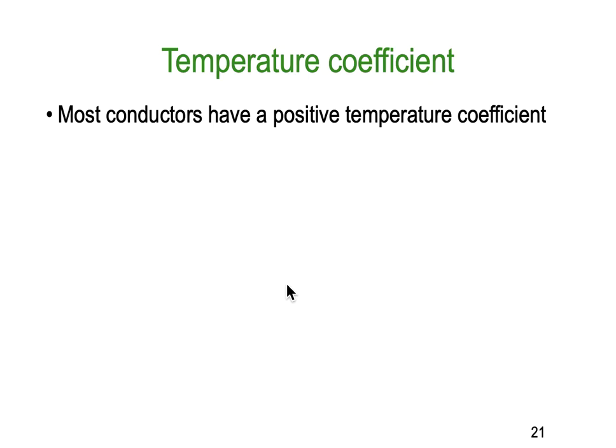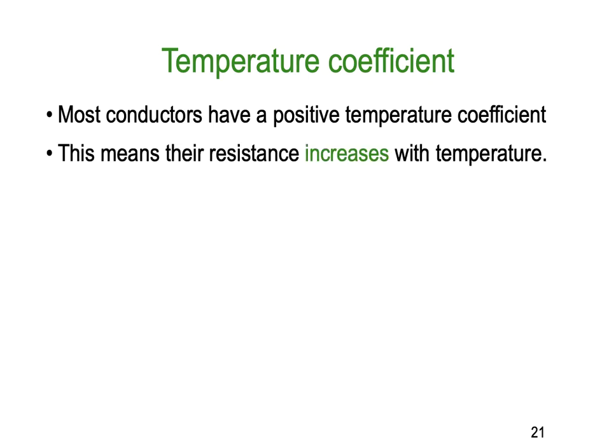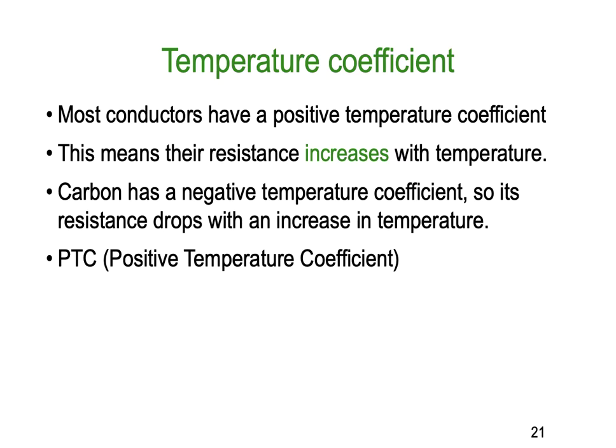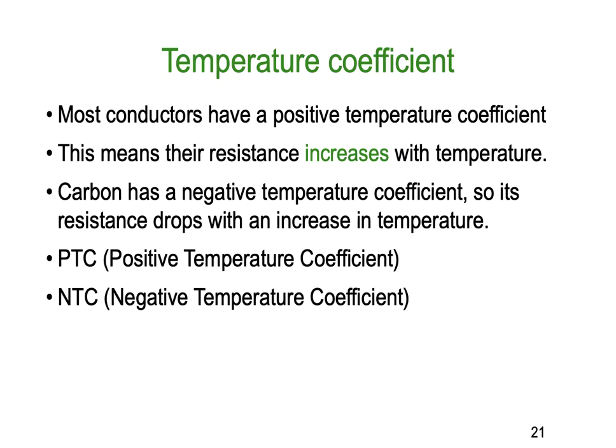Most conductors have a positive temperature coefficient, meaning their resistance increases as temperature increases. Carbon has a negative temperature coefficient, so its resistance drops with an increase in temperature — it goes the exact opposite direction. PTC is positive temperature coefficient; NTC is negative temperature coefficient, with carbon being the typical example.